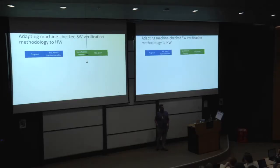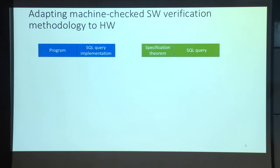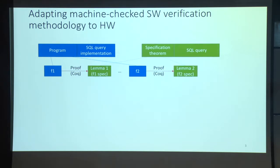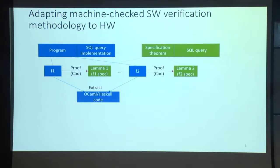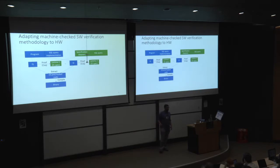Let's contrast that with the state-of-the-art in software verification using proof assistants like Coq. You have a program to verify — let's say an implementation of an SQL query. You write the program as several functions, and each of these functions has their own specification lemmas. You use the proof assistant to prove that the function meets the specification, and also that the composition of these proofs gives you the overall full system property. From the functions, you can extract Haskell or Caml code, which you run through standard compilers to generate binaries run on processors.